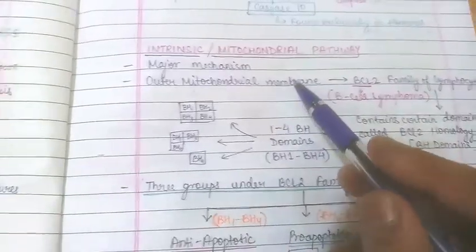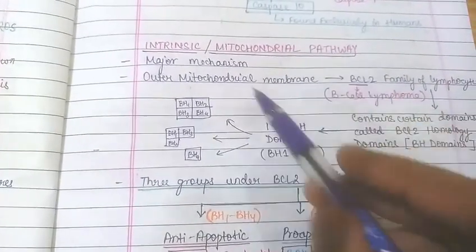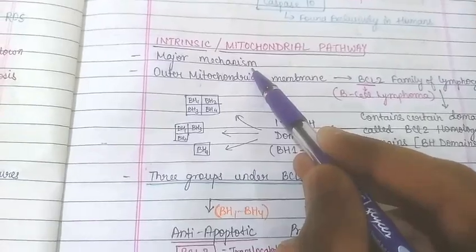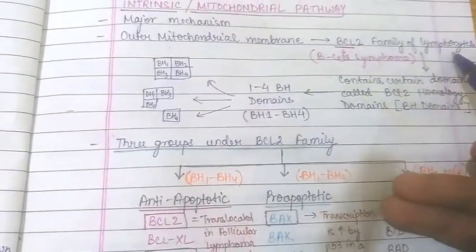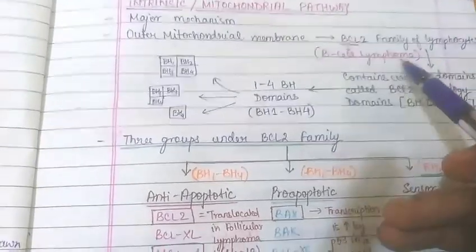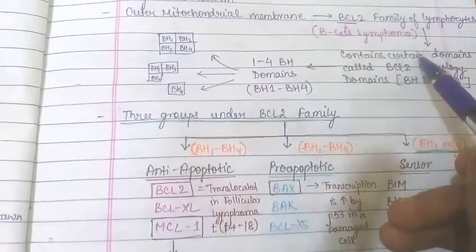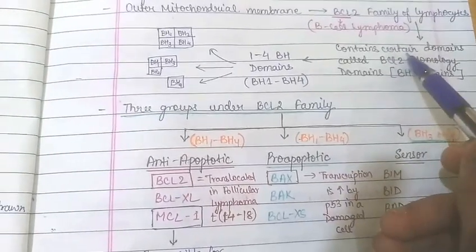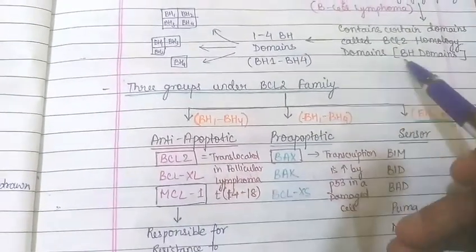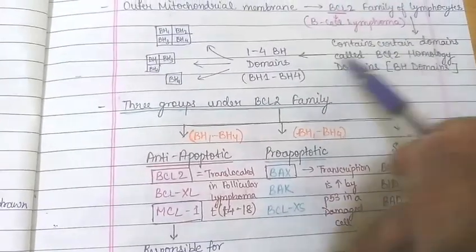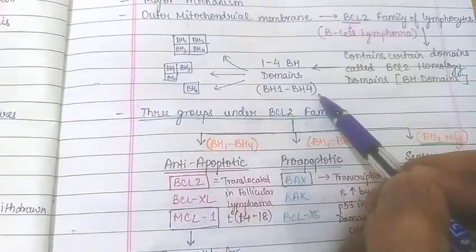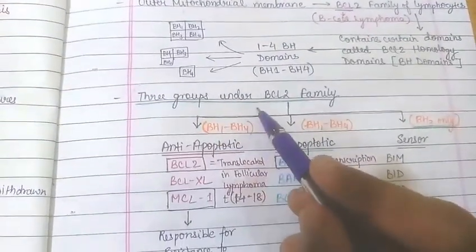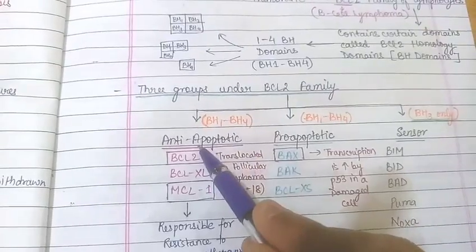The first mechanism is the intrinsic, or mitochondrial, pathway — the major mechanism of apoptosis. The outer mitochondrial membrane contains the BCL-2 family of proteins. BCL-2 stands for B-cell lymphoma. This family contains certain domains called BCL-2 homology (BH) domains, with BH1 through BH4, giving it one to four BH domains.